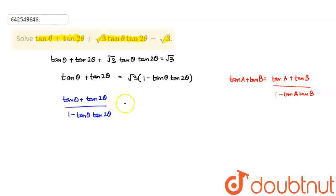So by using this formula, I can change this equation into tan of theta plus tan 2 theta upon 1 minus tan theta tan 2 theta. I'll just transpose this. So it is equal to root 3. And now using this formula, I can see I have received the form of tan A plus tan B.